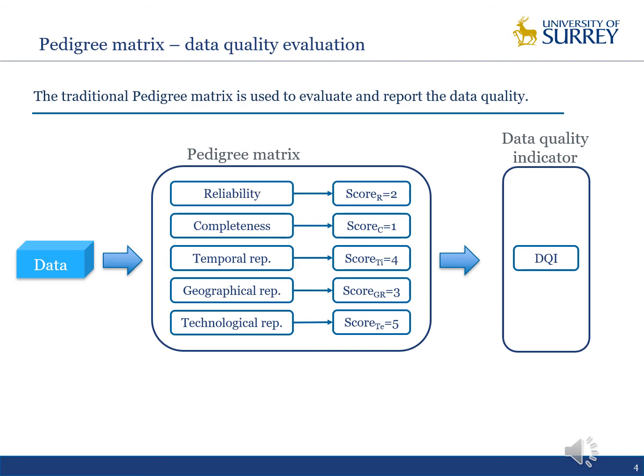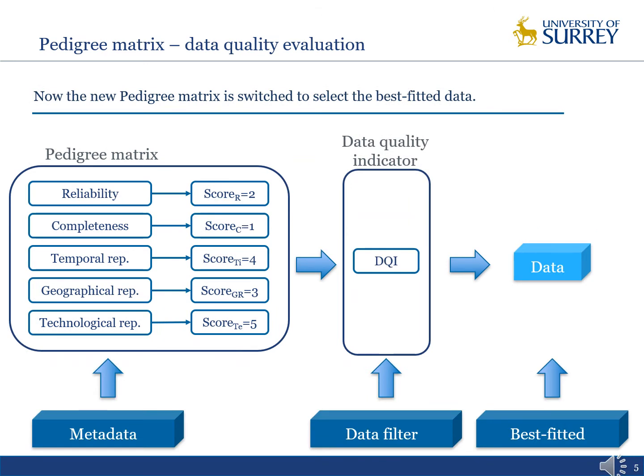To solve this problem, I present an improved Pedigree Metrics that can support the data selection process before its utilization. We switched the order of the previous Pedigree flow and used the five quality aspects as the metadata to describe the data we are looking for. Then the data quality indicator can be considered as a data filter, serving to find the best-fitted data among different data sources, so that the Pedigree Metrics becomes a data selector rather than a data evaluator.